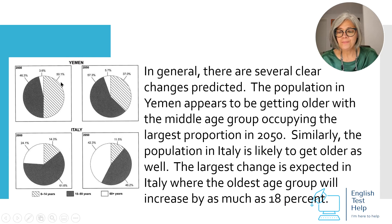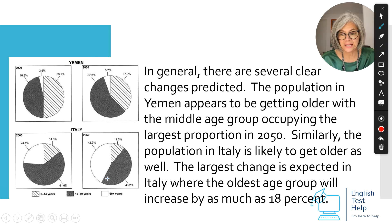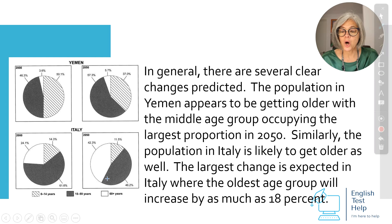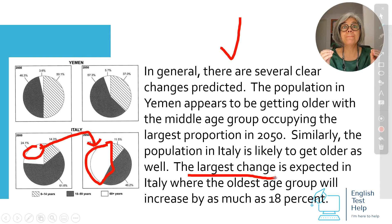Can you see? Yemen and Italy — both of them are likely to get older. But the largest change is expected in Italy, because the old age group shows the biggest difference from 2000 to 2050. So this student has done the right thing and focused on the most obvious.